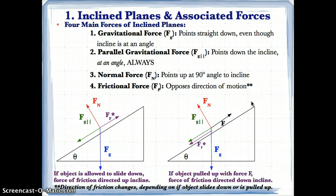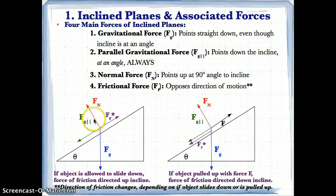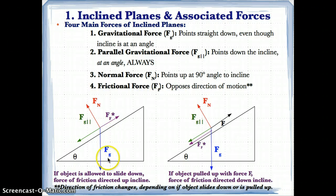Regardless of where the force of friction is directed, three things will always remain the same: the normal force will always point at a 90 degree angle to the plane; Fg parallel will always be pointing parallel to the surface; and Fg by itself will always point vertically downward no matter what, because gravity is always pointed straight down — there's no southwest or southeast, just straight down south.